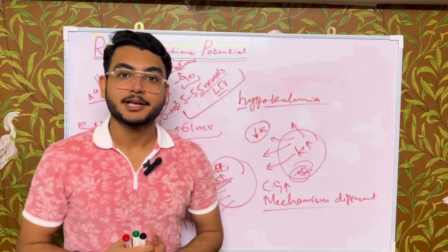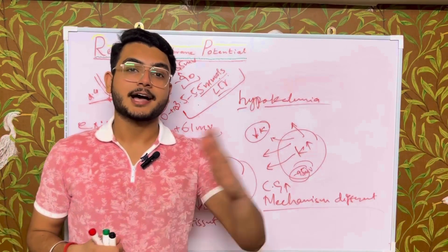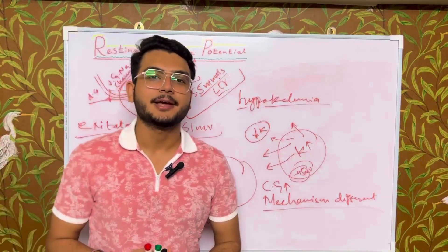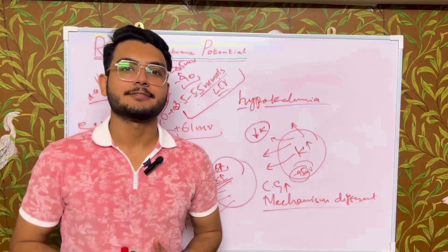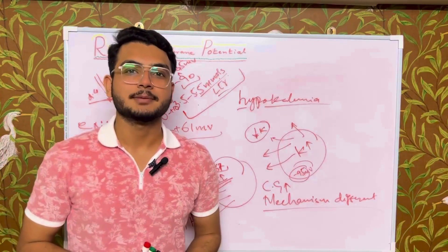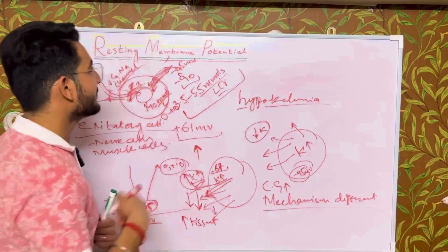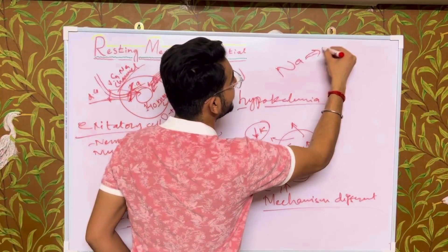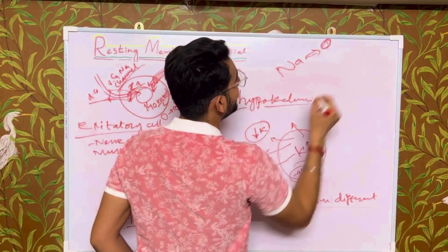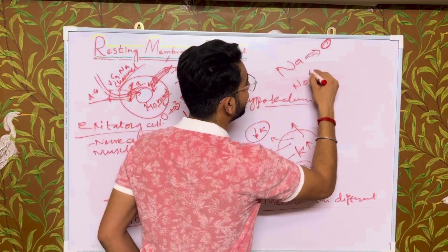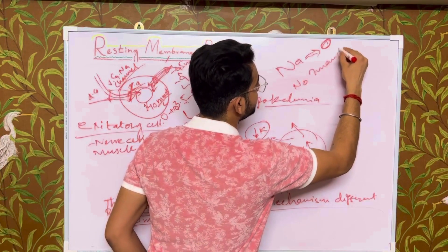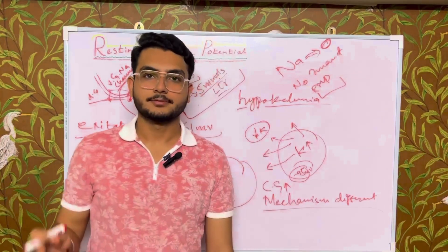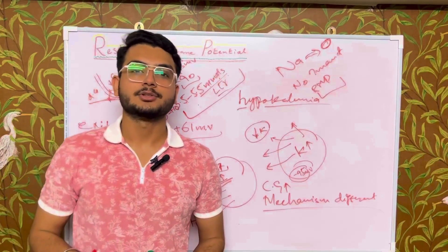A question arises: what are the effects of hypernatremia and hyponatremia on the resting membrane potential? Fortunately, hyponatremia and hypernatremia do not have any impact on the resting membrane potential, because at resting conditions the membrane's permeability to sodium is approximately equal to zero. So there is no impact on resting membrane potential from changes in sodium concentration.